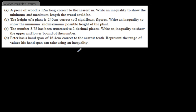All we do here is take the metre and split it into two. Whenever we're given a unit, we halve that. To find the lower bound, or the minimum value, we take half of the metre and subtract it from the 12. To find the maximum length, or the upper bound, we take that half metre and add it to the 12.